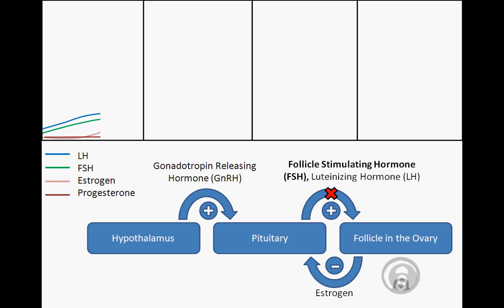As the follicle develops, it begins to release estrogen, which results in further changes within the female reproductive tract. First, estrogen has a negative feedback effect on the pituitary, slowing its release of FSH and LH. Second, estrogen impacts the uterus by stimulating thickening and increased vascularization of the uterine lining, thus beginning its preparation for potential embryo implantation as an egg is prepared in the ovaries.